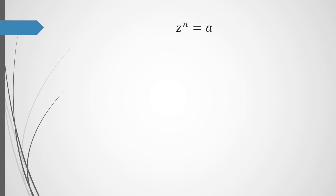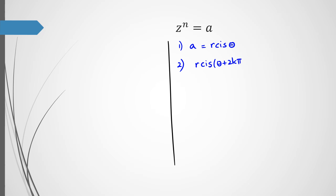I learned this method in high school and it's still being applied, but I also found a shortcut and I'll show you both ways. So if we have zⁿ equals a, the first step — common to both methods — is to write a in the form r cis θ.